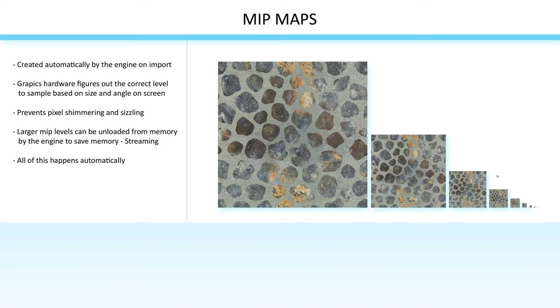If objects get really far away from the camera, the game engine can drop the high resolution mipmaps to make space in memory for other textures that are higher priority. So it's important for your textures to have mipmaps, both to help with texture filtering and to help the engine with texture memory management. Luckily this is done automatically, but it's still important to understand that it's happening.